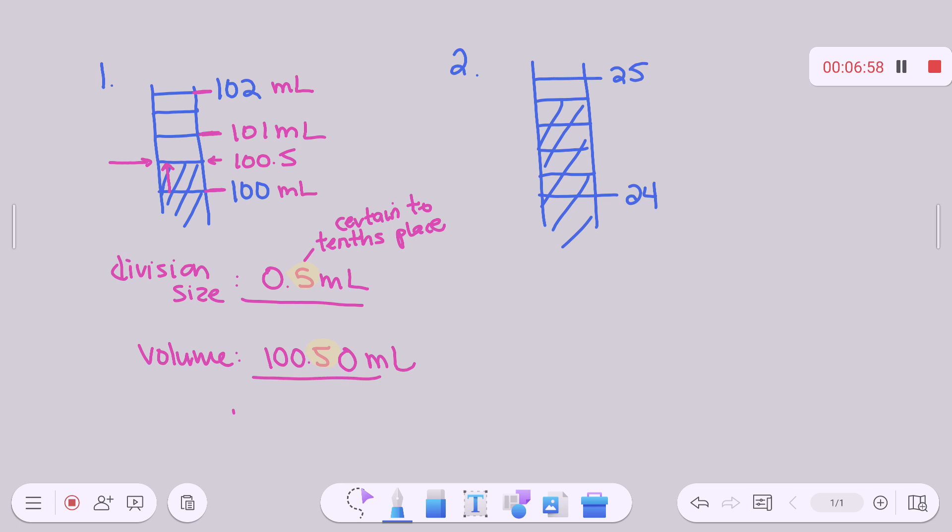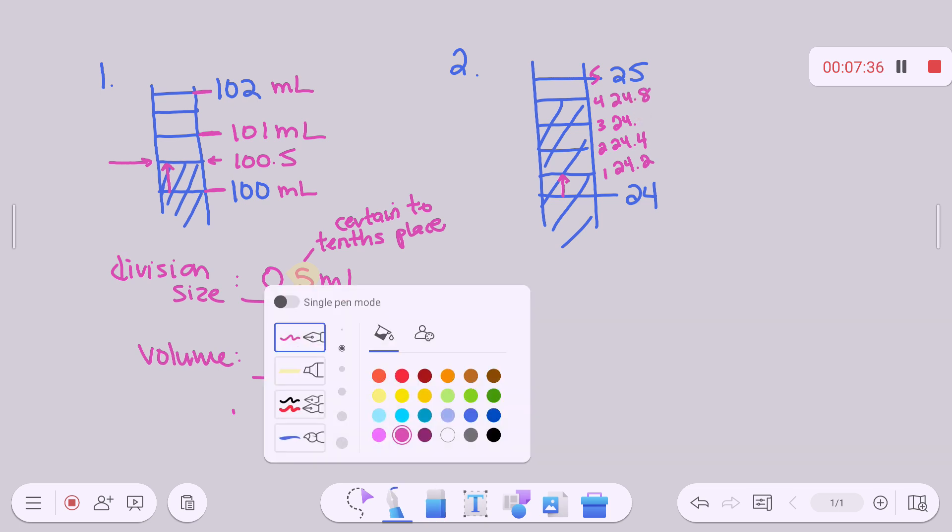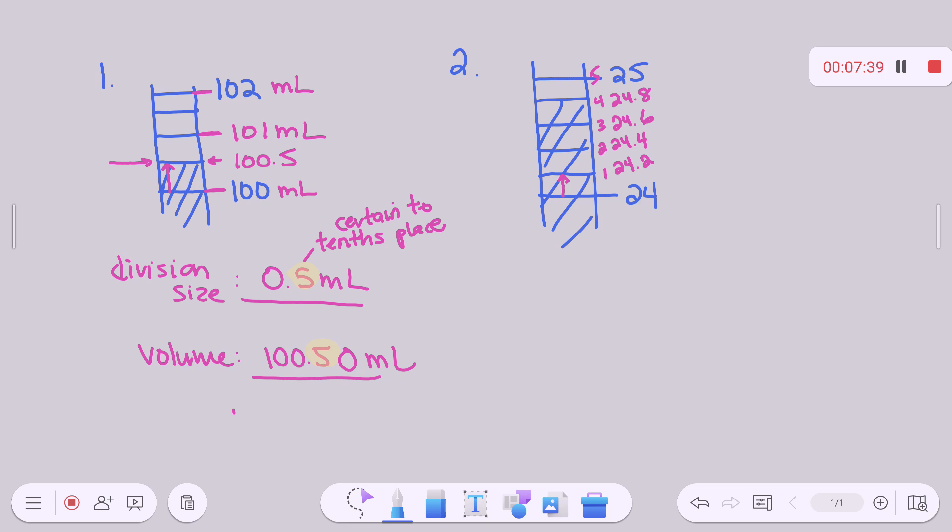You want to do another one? Okay. Let's come over here. Let's take a look at number two. So for number two, if we've got 24 and 25 and I've got one, two, three, four, five divisions in between. What would this be? 24 point what? Two, which means this is 24.6, 24 point, no, four, right? Let's fix that. 24.4, 24.6, 24.8, right?